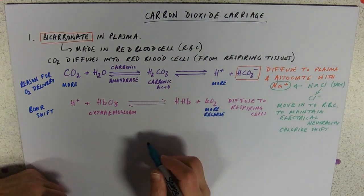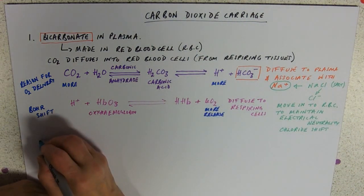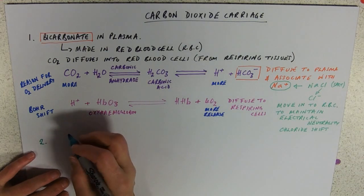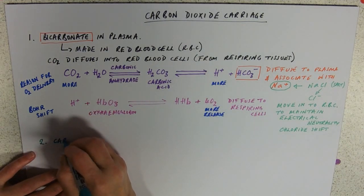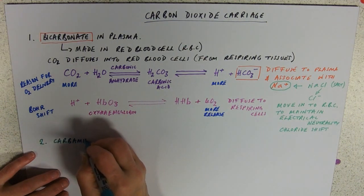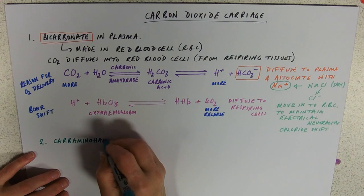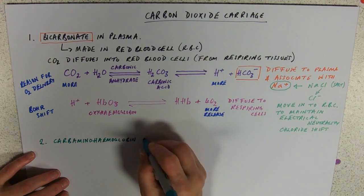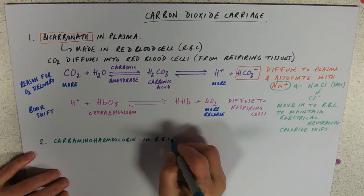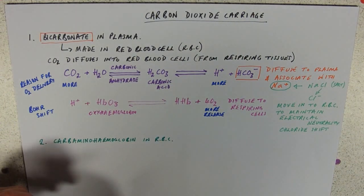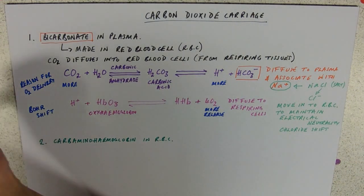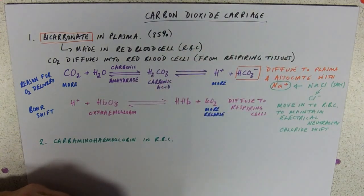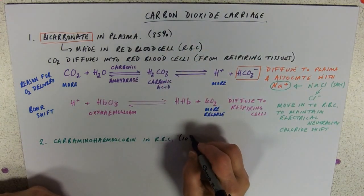So I said that there were more than one. So here we go. So the second most common way of carrying carbon dioxide is as carbaminohemoglobin. So this is in our red blood cells. So if I was to have to put numbers on this. Around about 85%. Around about 10%.